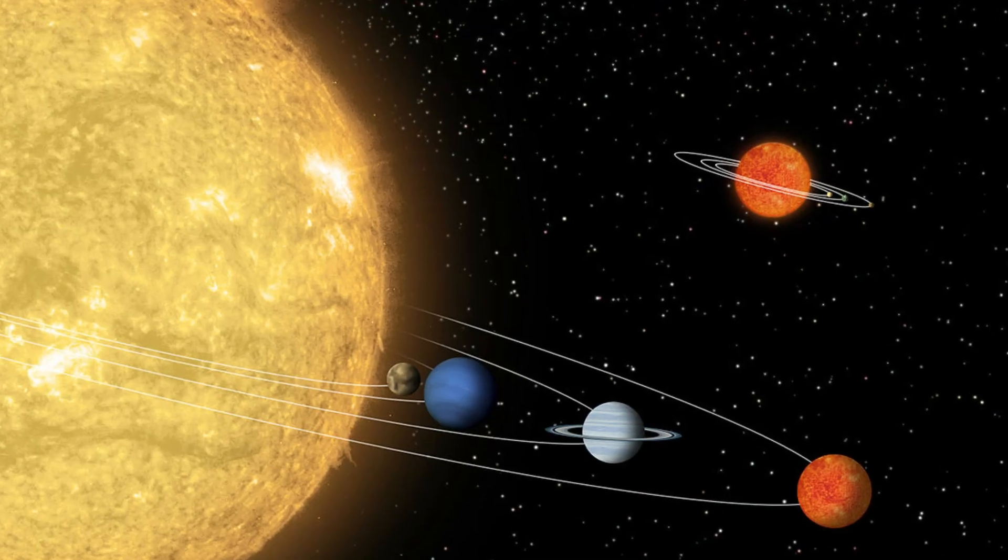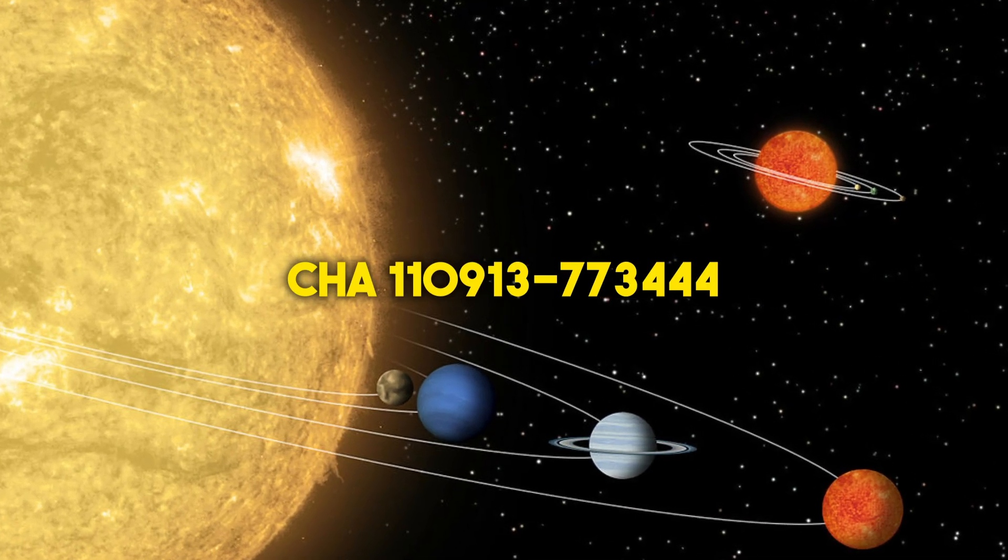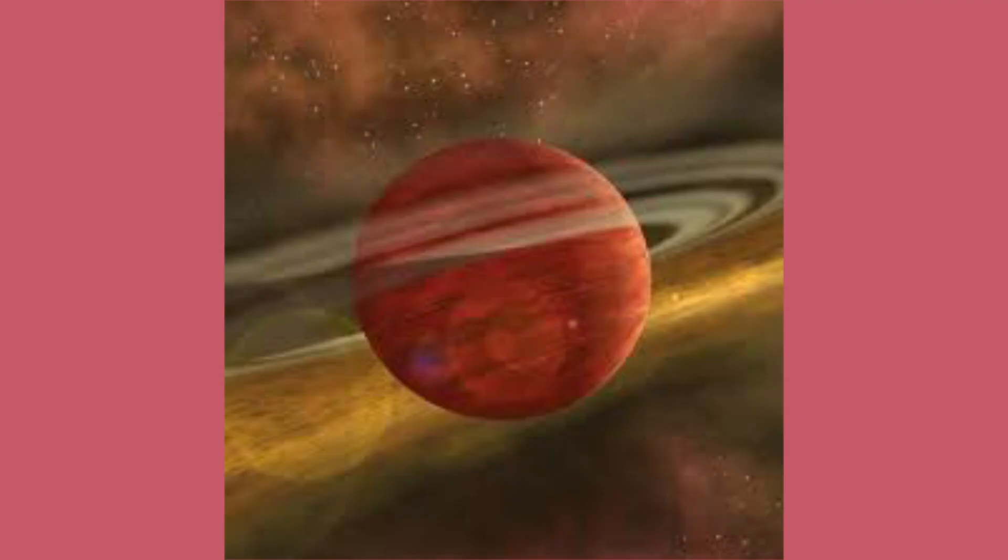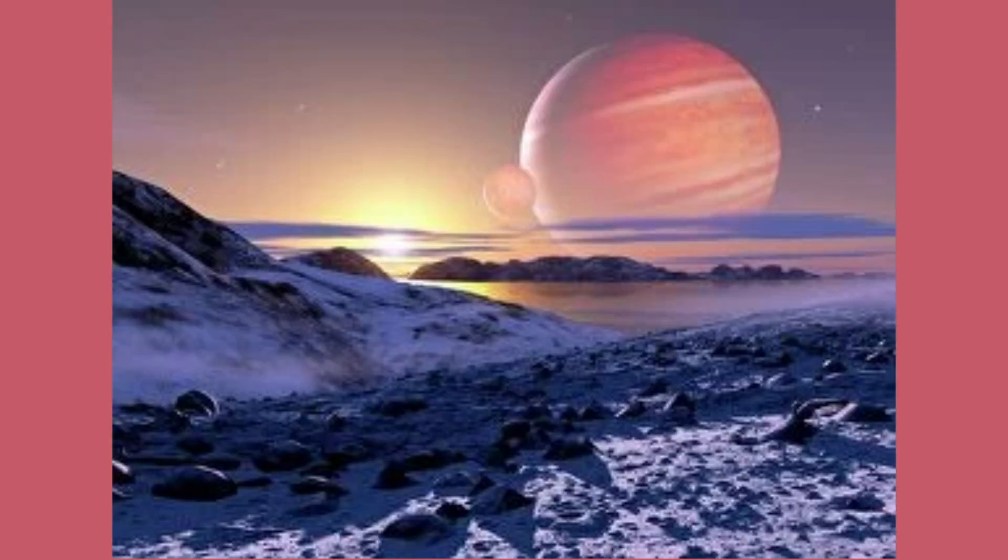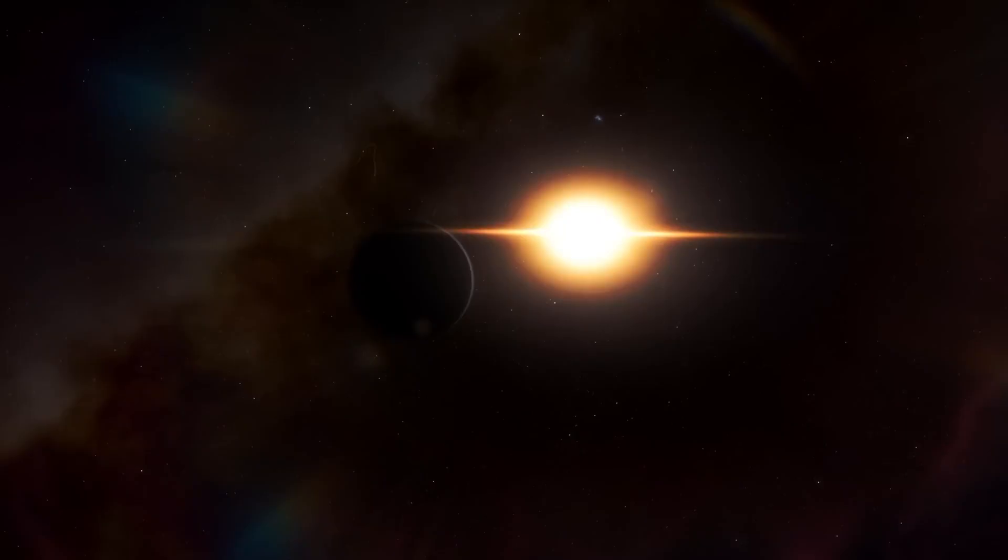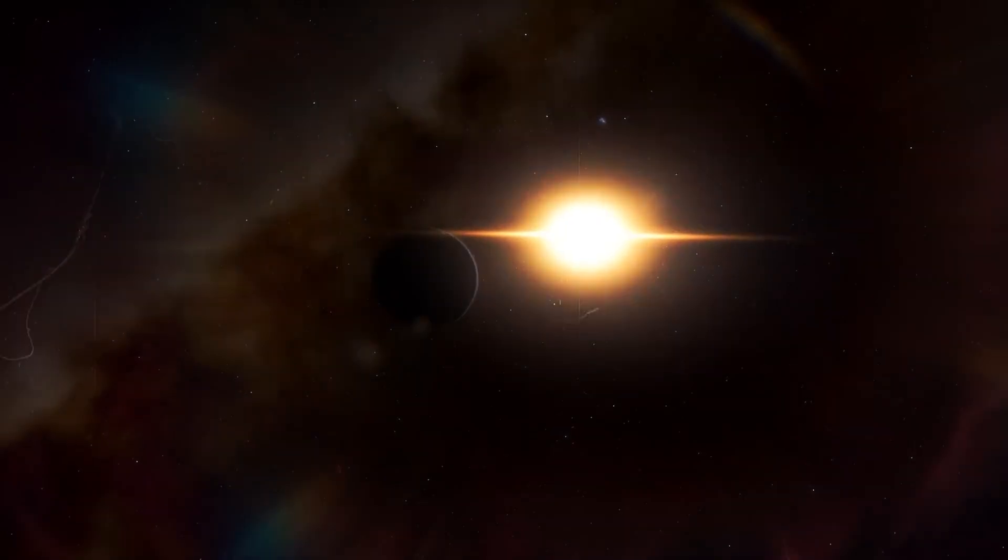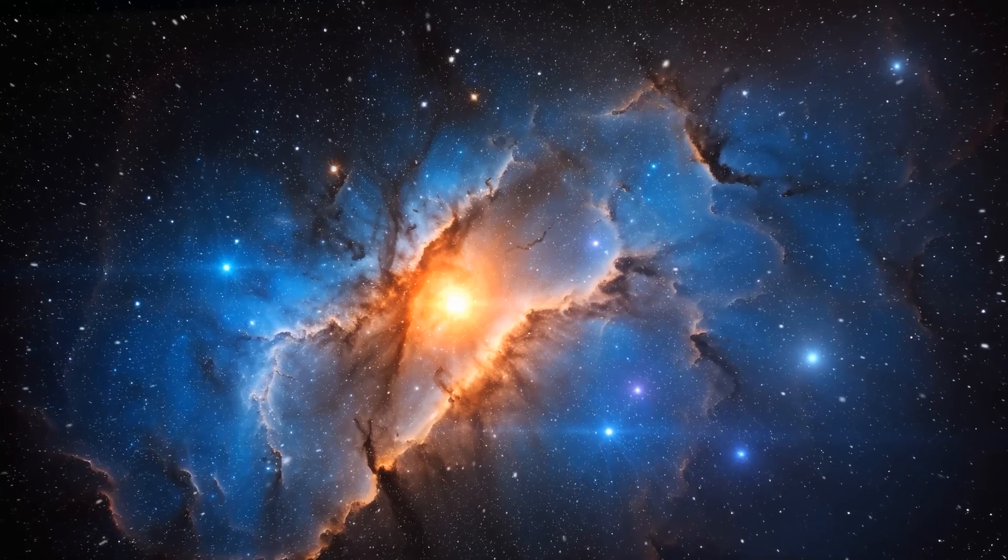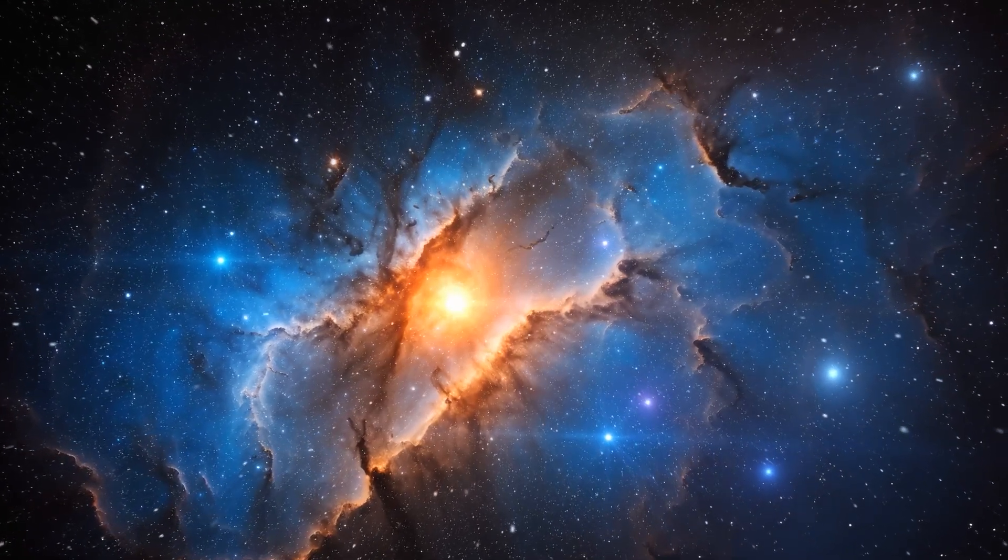Even more intriguing is Cha 110913-773444, a rogue planet ensconced in a protoplanetary disk, making it one of the youngest free-floating substellar objects known, with an age estimated between 0.5 and 10 million years. These discoveries offer tantalizing glimpses into the diversity and complexity of the exoplanetary landscape beyond our solar system.